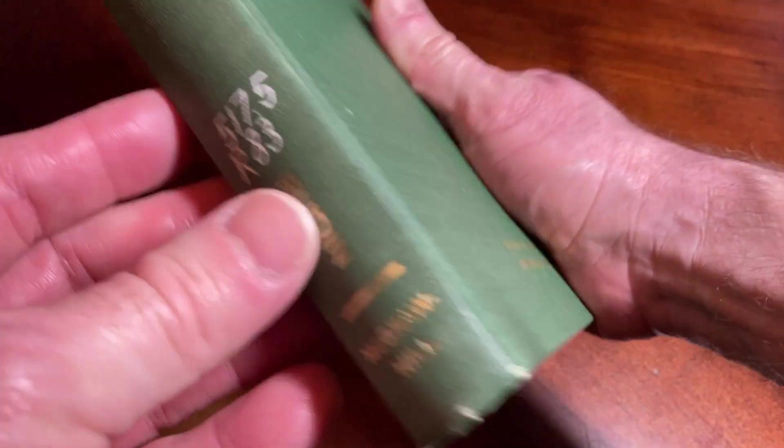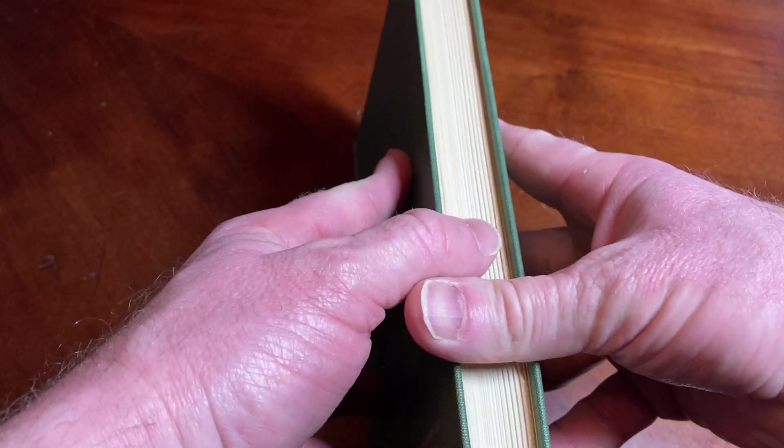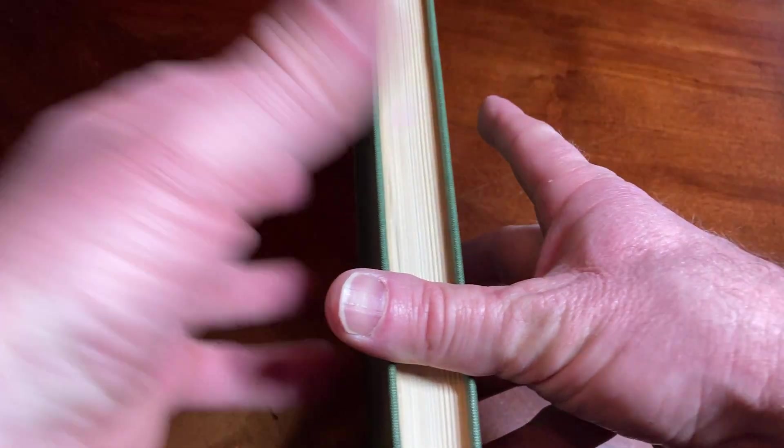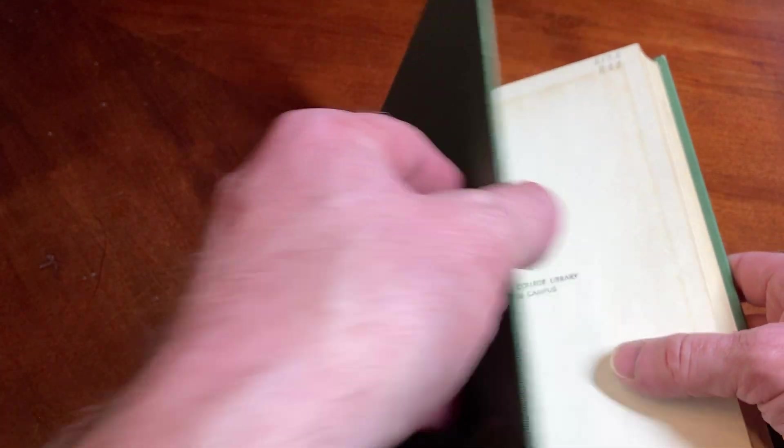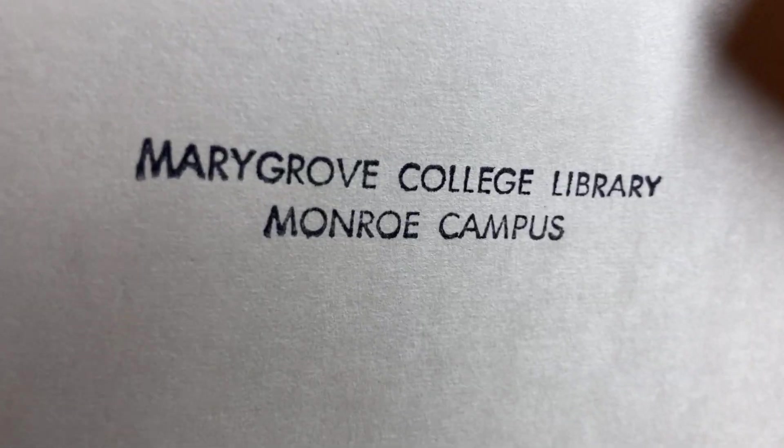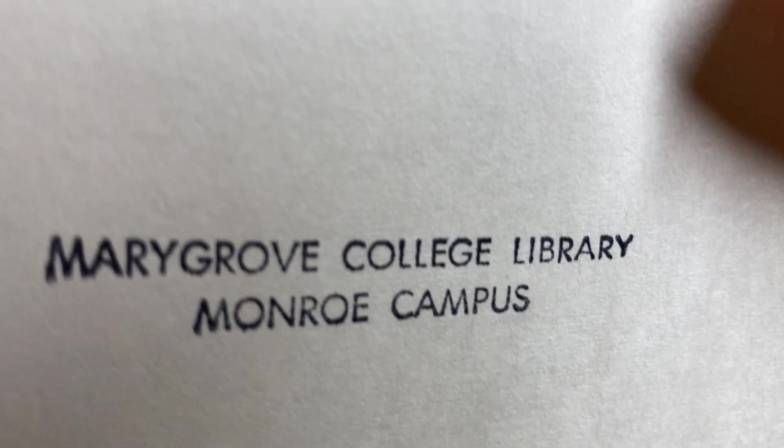This book is amazing and it is by Rudin. This is an ex-library book, meaning this book came from a library. It actually came from the Marygrove College Library Monroe campus. The library name is right there.